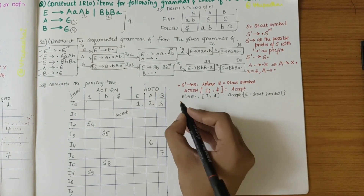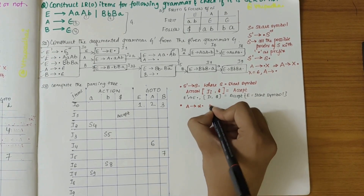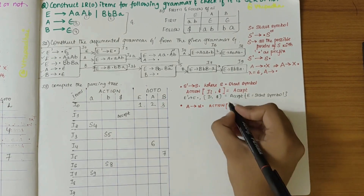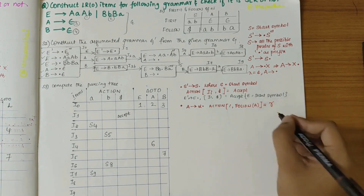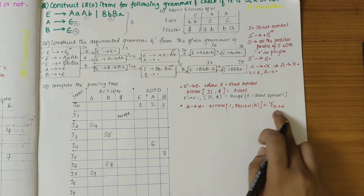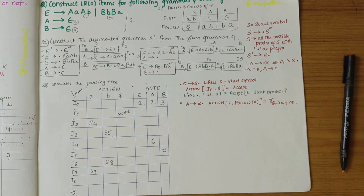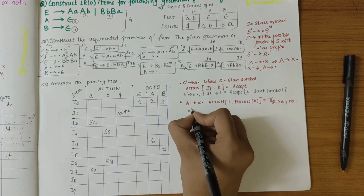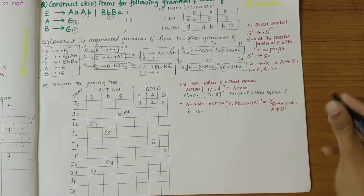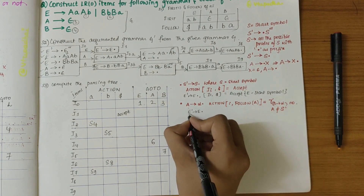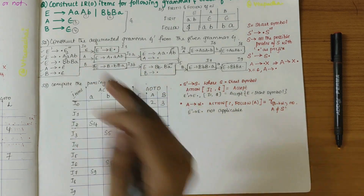Now for the reduce part: if there's any production of the form A → α•, then action[i, follow(A)] = reduce(A → α), where the production number identifies the rule. One condition: A should not be the start symbol. So for I1 which has E' → E•, since E is the start symbol, this reduce rule does not apply — we already wrote 'accept' there.